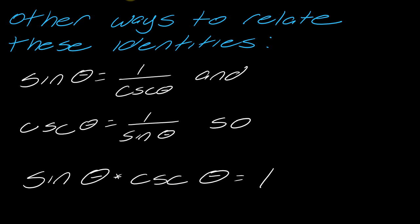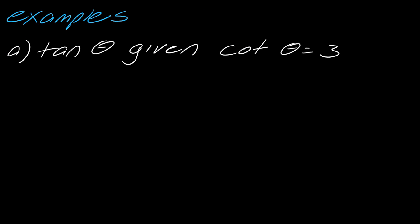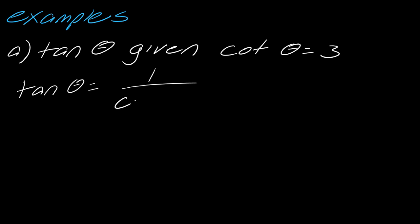I have just a few examples here to get us used to these reciprocal identities. I've got tangent of theta given cotangent of theta is 3. Tangent of theta I know is equal to 1 over cotangent of theta—this is the big thing you're getting used to in this exercise. I think it would be wrong just to go straight to the reciprocal. The point of these exercises is to get you used to this relationship, so by writing it out over and over, you kind of start committing that to memory.